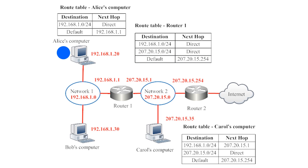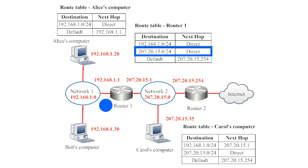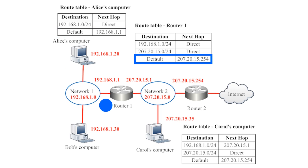So if Alice wanted to send information to Bob's IP address, then Alice's route table would direct that information directly to Bob's computer. If Alice wanted to send information to Carol's computer, then the route table on her computer would direct that information to router 1, and then the route table on router 1 would direct that information to Carol's computer. If Alice wanted to access a web page somewhere else on the Internet, then the route table on her computer would direct that information to router 1, the route table for router 1 would direct that to router 2, and then so on throughout the Internet until Alice's web page request reached the appropriate server.